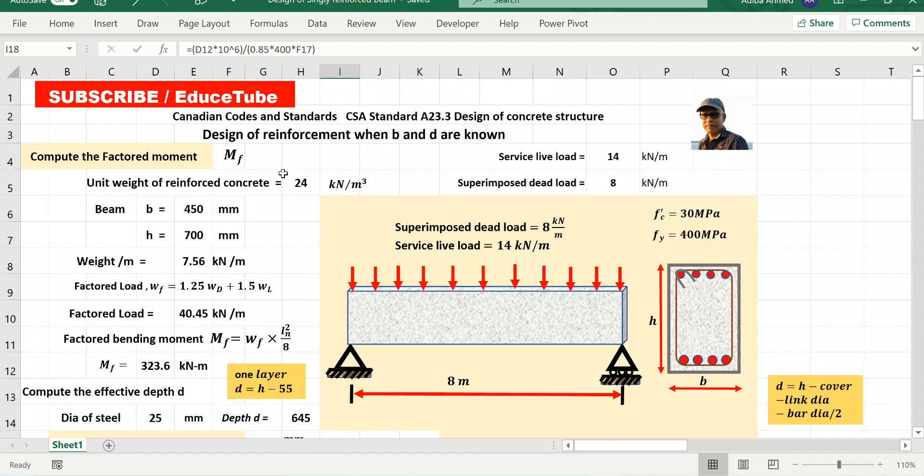If we consider that for architectural reason, beam dimensions are given. Say it is 450 by 700. We can see the section here.